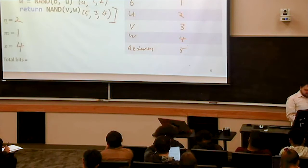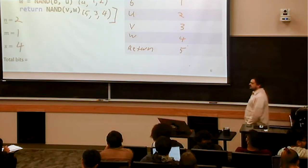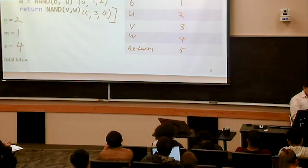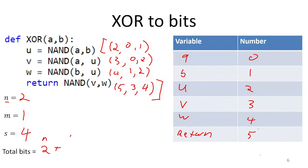Now let's look at how many bits we're going to require in order to represent this program. How many bits does it take to represent N, where N is 2? Two bits. So we're going to have two bits for N, plus the number of bits to represent M — that's one bit for M — plus the number of bits it takes to represent all of my lines of code. Each line of code is going to be three numbers long, and we have S triples to represent. So this is going to be 3 times S, times the number of bits we need to represent each variable.